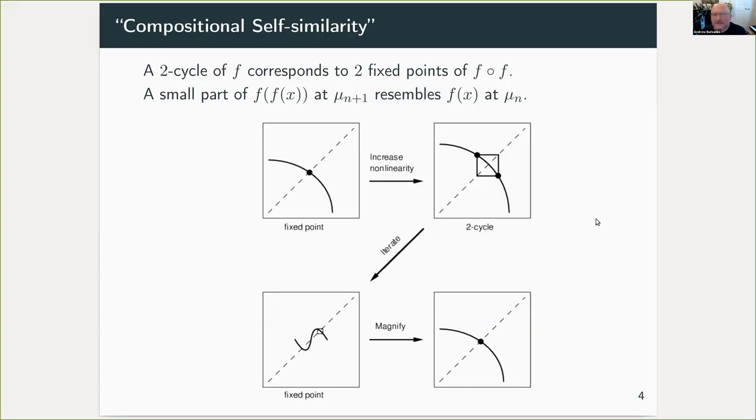The key to understanding this sort of universality is to realize that a two cycle of a function f corresponds to two fixed points of f composed with itself, and so a small part of f composed with itself at the next period doubling bifurcation resembles the original function of the previous one. Diagrammatically, if we zoom in on a region of the map around a fixed point and we adjust our parameter increasing the non-linearity to go through a period doubling bifurcation to a two cycle, composing the map with itself reduces that to a pair of fixed points, and the idea is that we rescale, and asymptotically as we go further up the bifurcation tree we find closer and closer resemblance with the original picture.